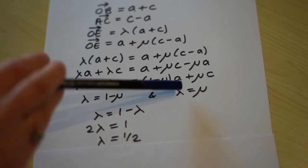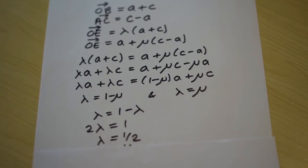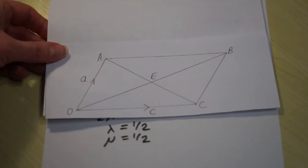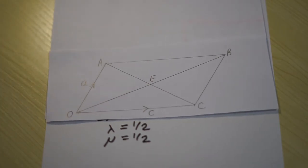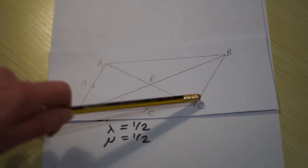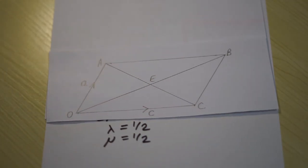So the second equation says that lambda equals mu, so therefore mu equals a half as well. We've shown that E is the same fraction along OB as it is along AC, and that fraction is a half. So therefore E is the midpoint of both the diagonals, and the diagonals therefore bisect each other.